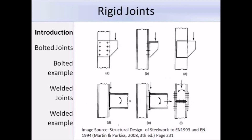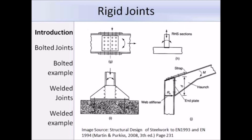Some examples of rigid joints: A, B and C are rigid column brackets; D and E are rigid beam-to-column joints; and F is a column-to-column joint, basically a splice joint. Further examples include G, a beam splice; H, a rigid hollow section joint typically found in a T-joint in a Vierendeel girder; I, a rigid column-to-foundation joint; and J, a rigid knee joint, which can be found in a portal frame.